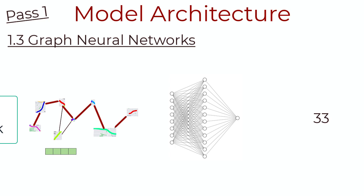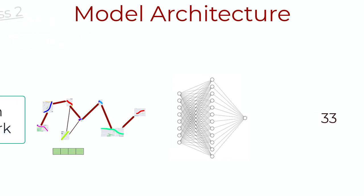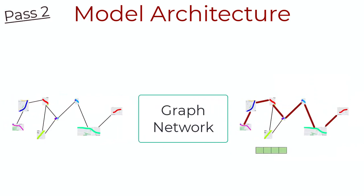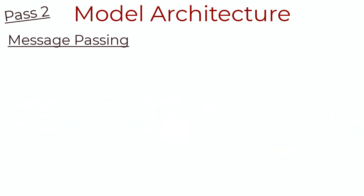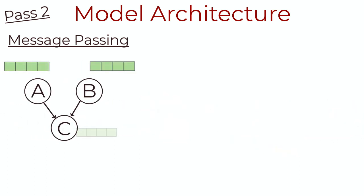Now let's get into some details with pass two. For the graph network, we take every road segment as a node and they are connected by an edge if the roads are connected. The goal is to learn the embeddings for the nodes, that is the road segments. This is done by an iterative process called message passing. Let's talk about that with a simpler example. Consider a graph with just two nodes, A and B, that point to a third node, C. We're going to perform message passing for node C.